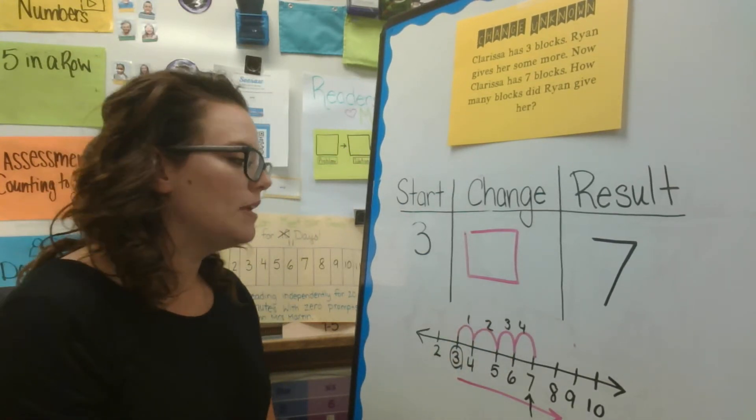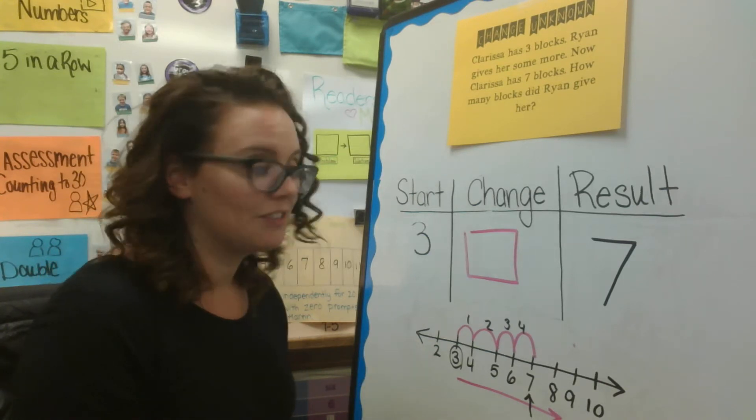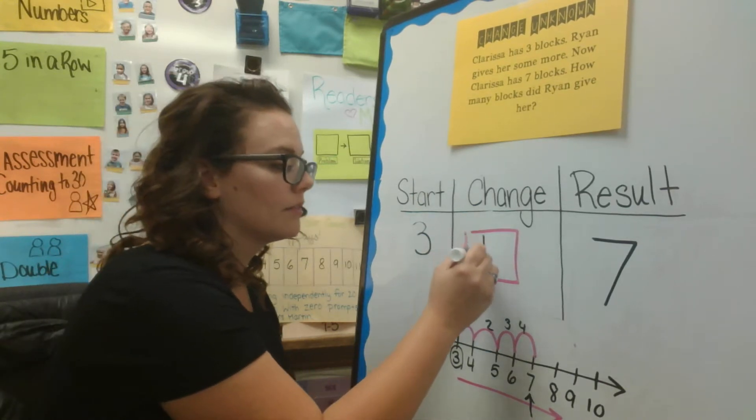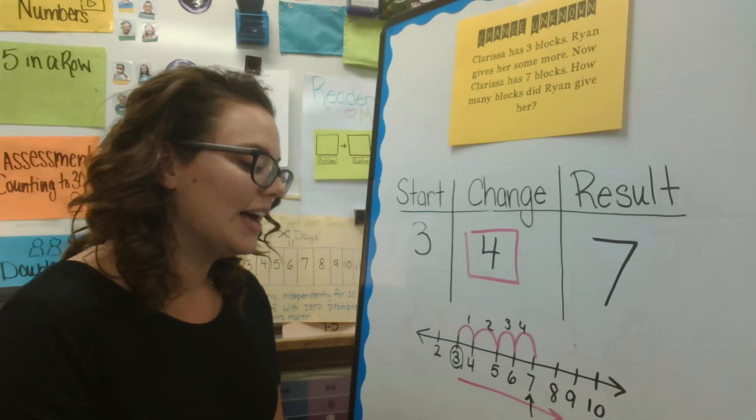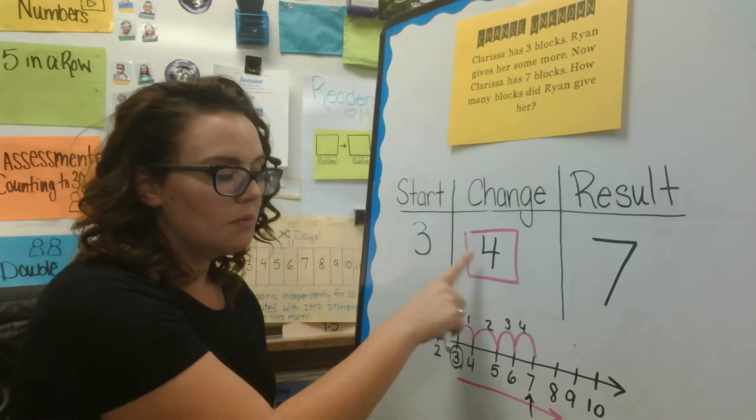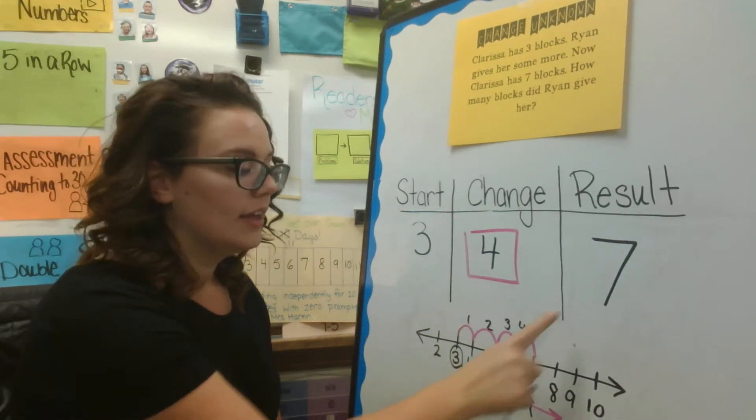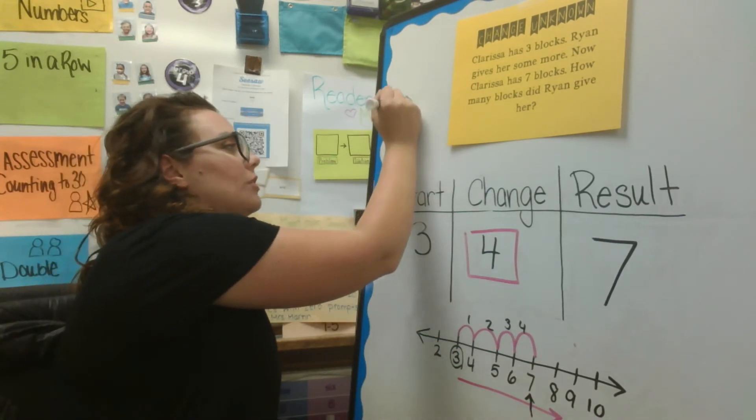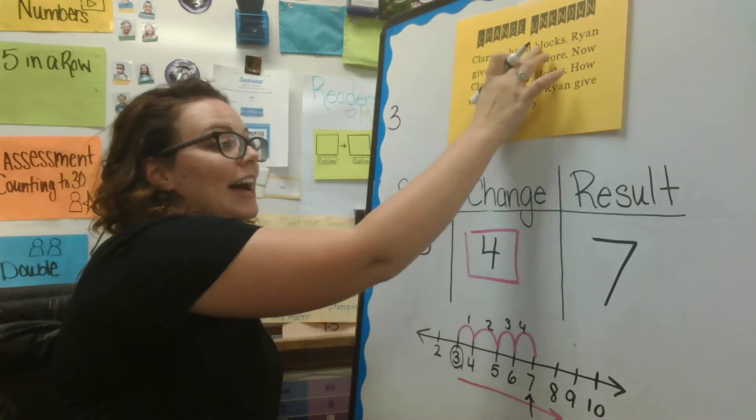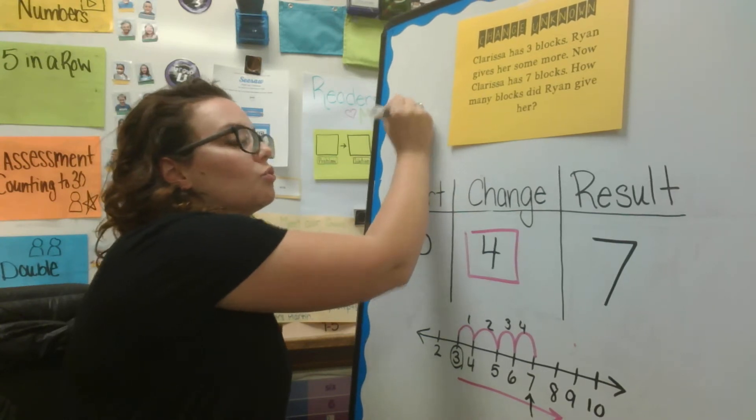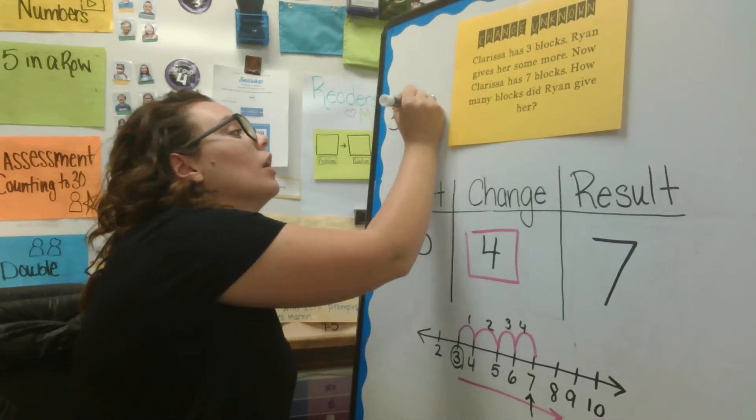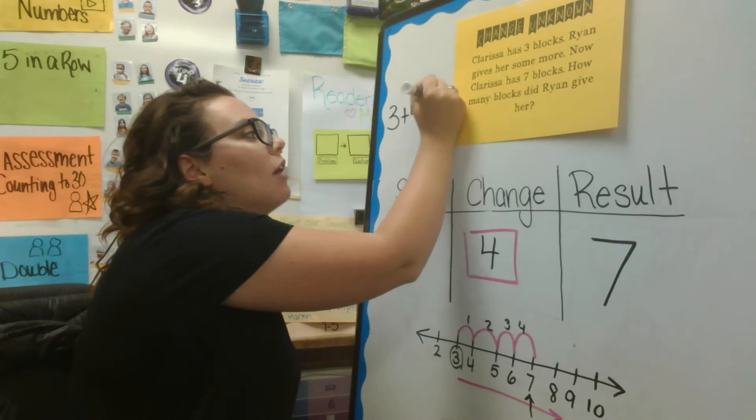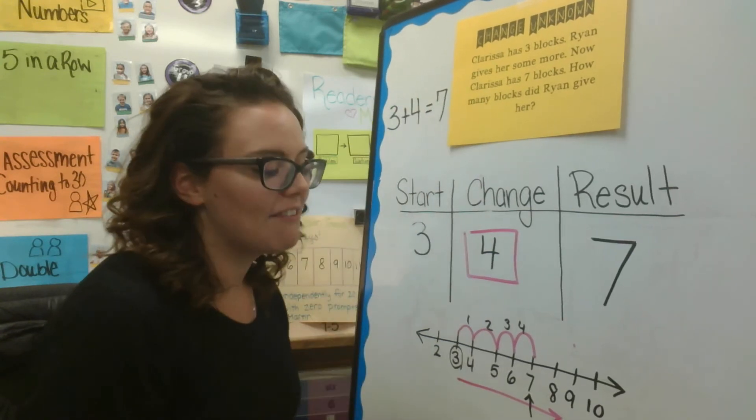Which means that Ryan must have given her four blocks because three plus four equals seven. Let's make that as an addition sentence. Clarissa has three blocks. Ryan gave her four more. Now, Clarissa has seven blocks.